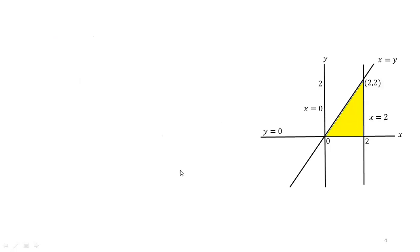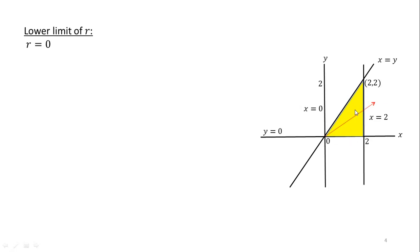After highlighting our region of integration, we will calculate the limits of r. In order to calculate limits of r, we will pass an arrow through this region starting from the origin. Since the origin is included in your region, the lower limit of r is always 0 and the exiting boundary is x equal to 2. The distance of each point of the boundary varies as the angle changes in the counterclockwise direction, so the upper limit of r is variable in this case.